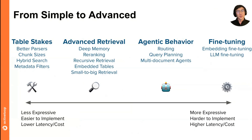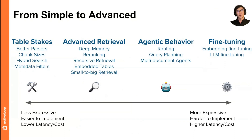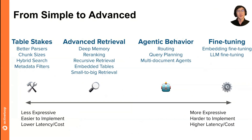There are basically table stakes techniques that you can try to incrementally improve your RAG system. This includes better document parsers, measuring and trying out different chunk sizes, and adding basic retrieval parameters like hybrid search and metadata filters on top of your RAG pipeline to see if metrics go up.